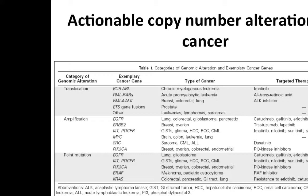This is a list of known copy number alterations in cancer that are actionable — meaning there's a drug that can be administered in the presence of that particular event and have some effect on treatment outcome. The classic example is ERB-2, also known as HER2.